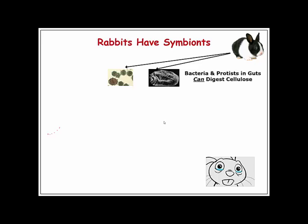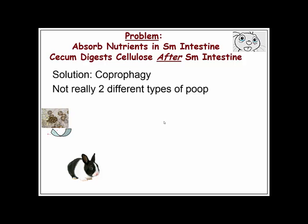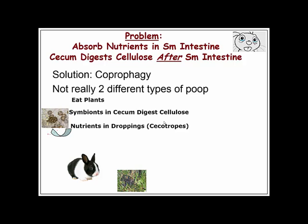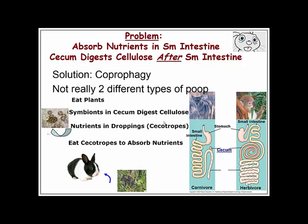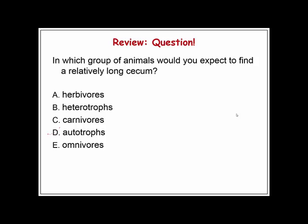Rabbits have symbiotes but don't have the special four-chambered stomach that cows have. So they actually eat their own feces in a process called coprophagy. They produce two different types of feces — one containing the symbionts and one after the symbionts are done. Termites similarly have a rectal pouch containing bacteria and protozoans that help digest cellulose.